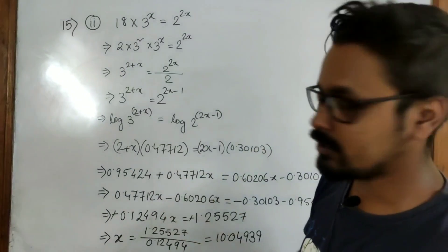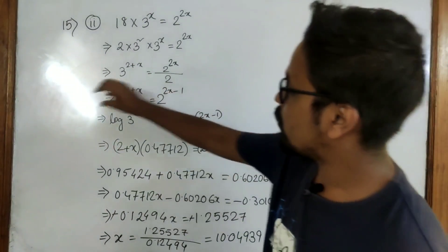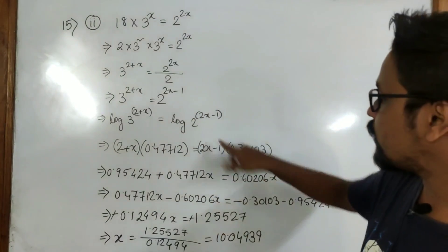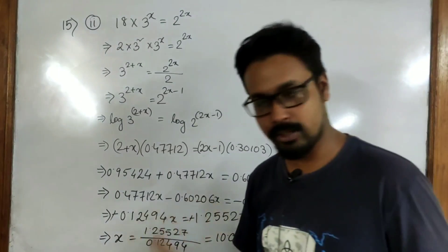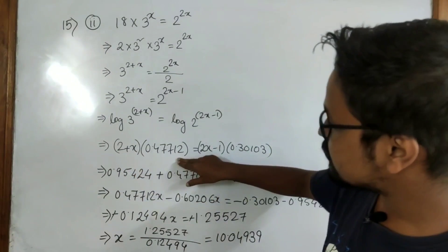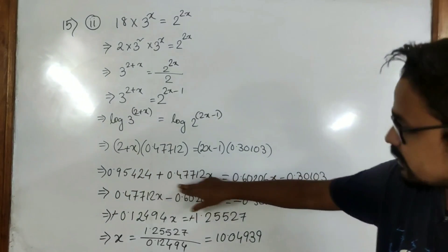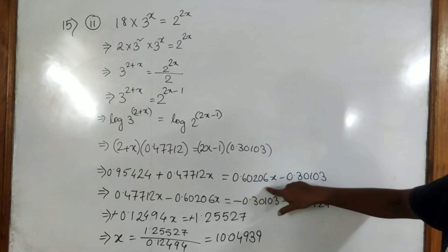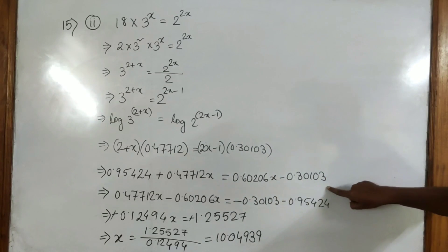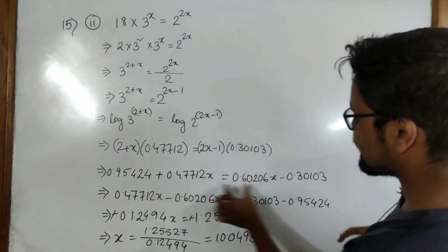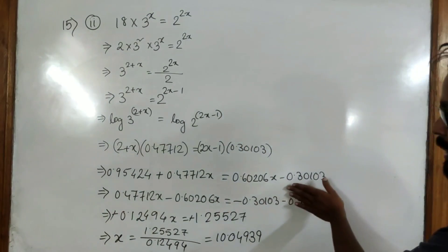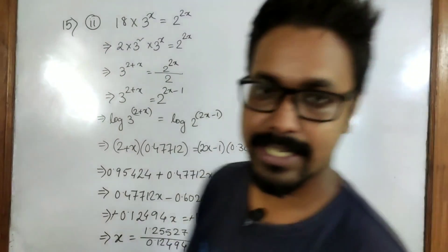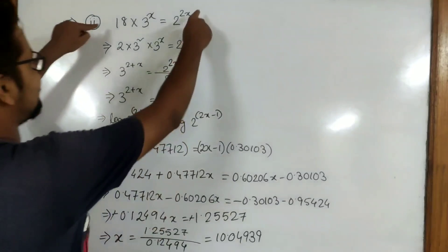Now we need to bring in logarithm. We take log on both sides and the power goes to the front. We write the value of log 3 as 0.47712 and log 2 as 0.30103, then do normal calculation. Breaking the brackets: 2 into this gives us this value, x into this value gives us another value. Then 2x into 0.30103 gives 0.60206x, and minus 1 into this gives minus 0.30103. Bringing x values to one side and constants to the other, we get the value x equal to 10.04939.